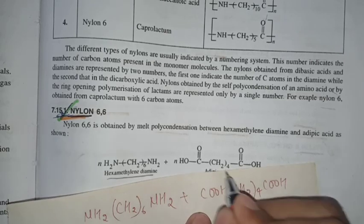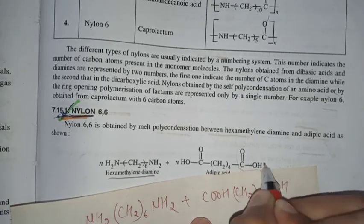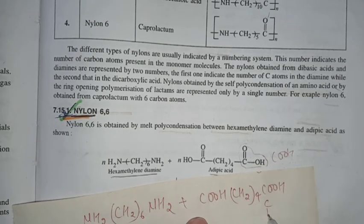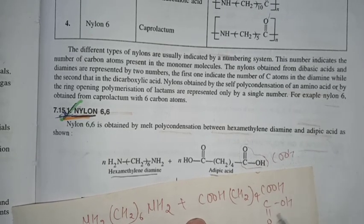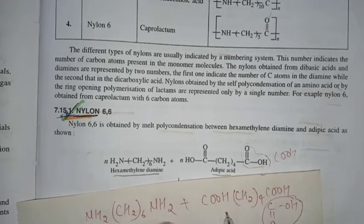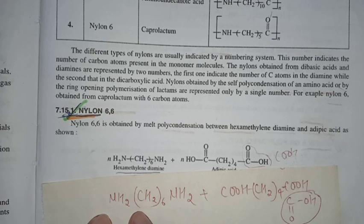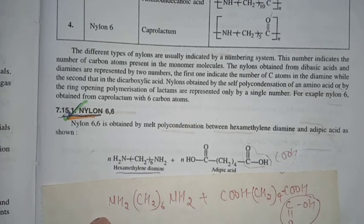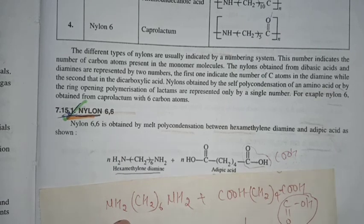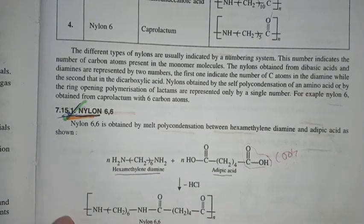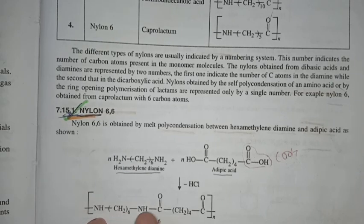This is hexamethylene diamine. Adipic acid is COOH-CH2-4-COOH. This is the open formula. This is hexamethylene diamine and this is adipic acid.